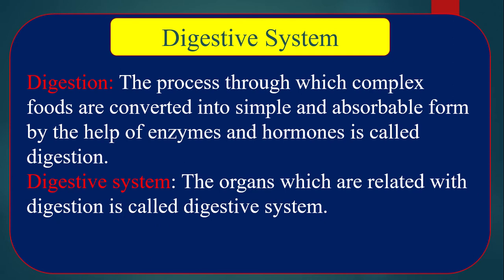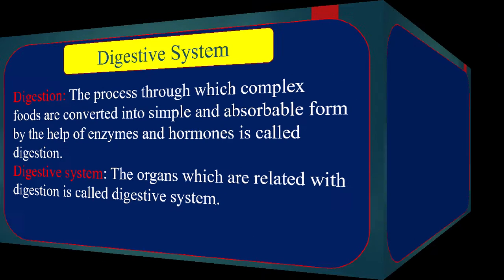The process through which complex food is converted into simple and absorbable form is called digestion. The organs which take part in digestion are called the digestive system.